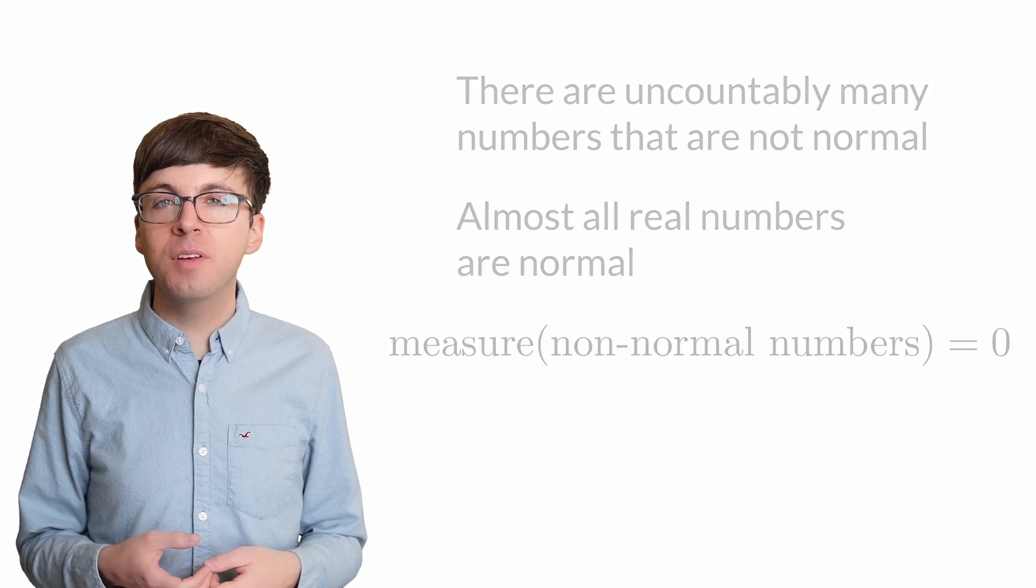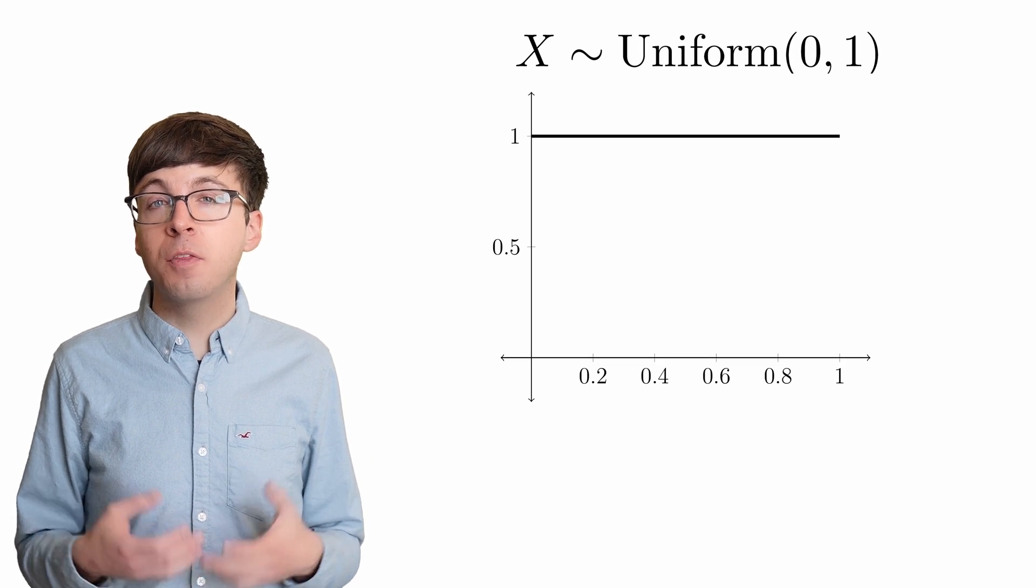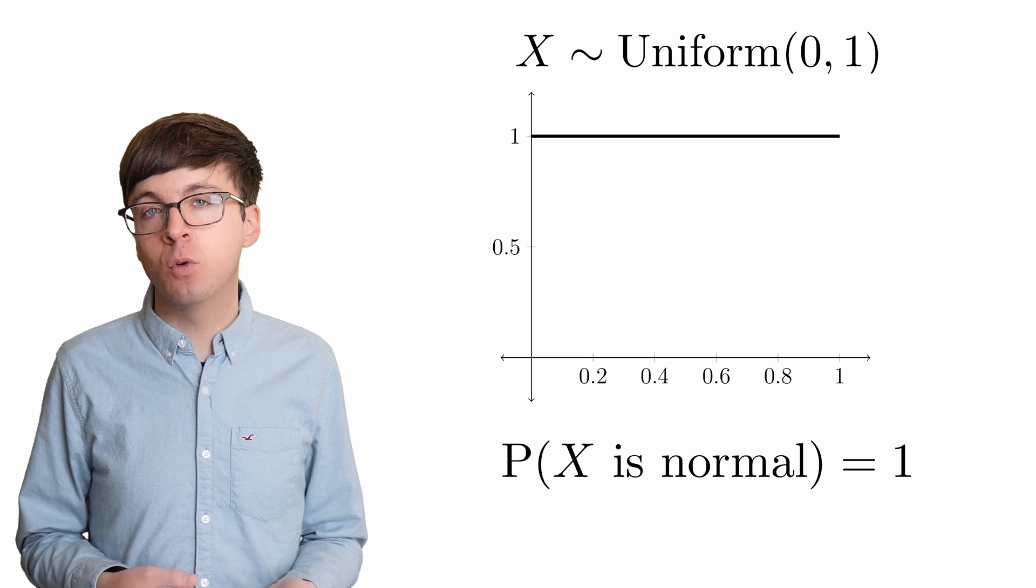Another way to interpret this is that if we pick a real number uniformly at random between 0 and 1, then there's a 100% chance that we pick a normal number.